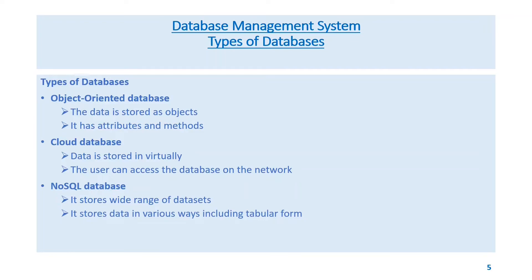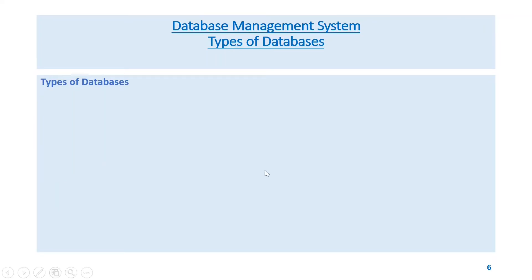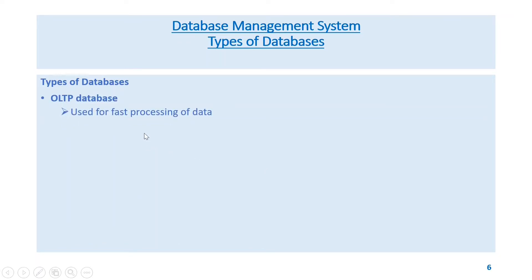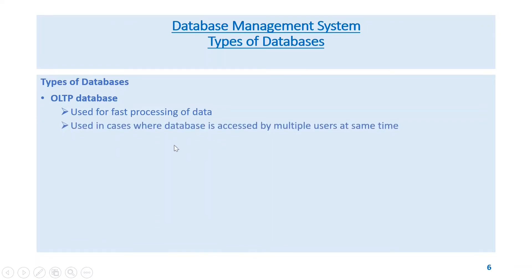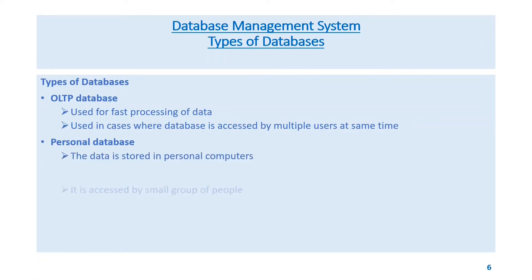NoSQL database — stores a wide range of data sets and stores data in various ways including table forms. OLTP database — Online Transaction Processing — used for fast processing of data, used in cases where the database is accessed by multiple users at the same time.